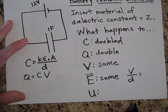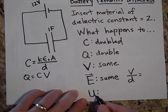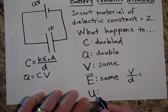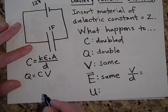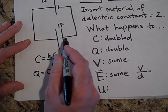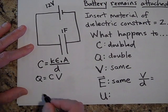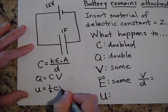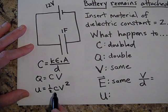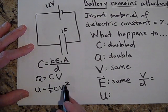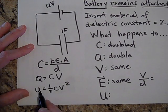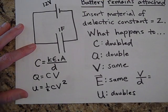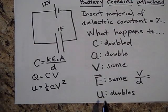What's going to happen to the potential energy? I'm going to use the equation U = ½CV². Since the voltage hasn't changed because of the loop rule, and C doubles, the energy doubles.